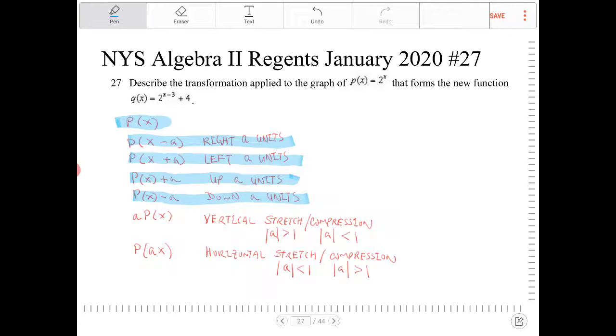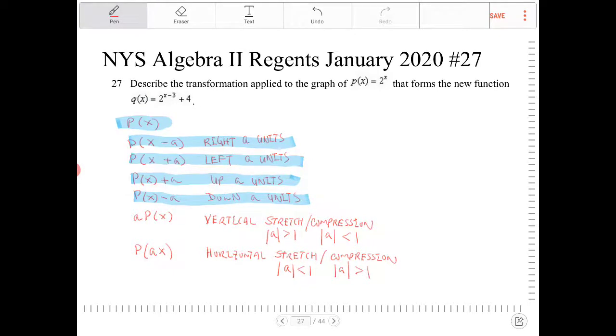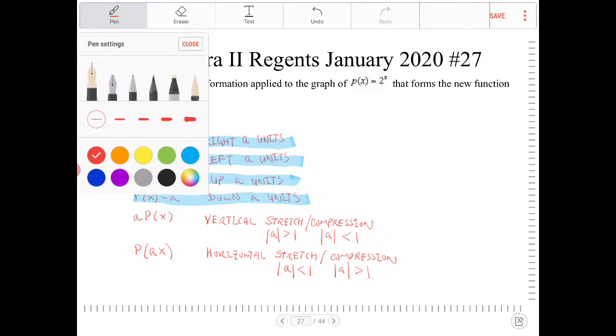What that means is any value greater than 1 or less than negative 1 will cause a vertical stretch. If a is between negative 1 and 1, that will cause a compression.